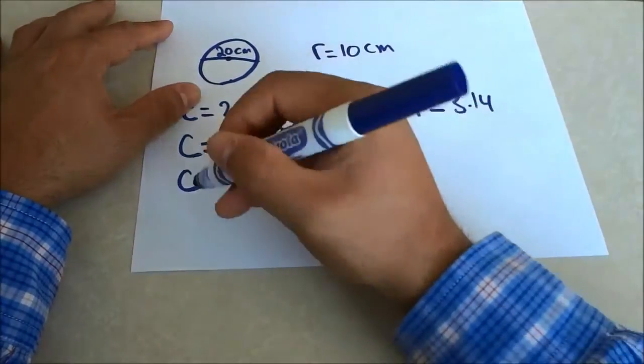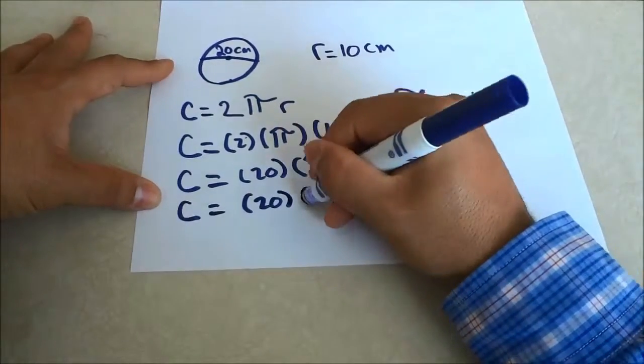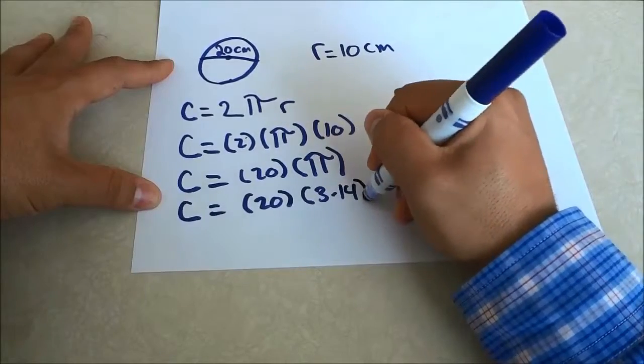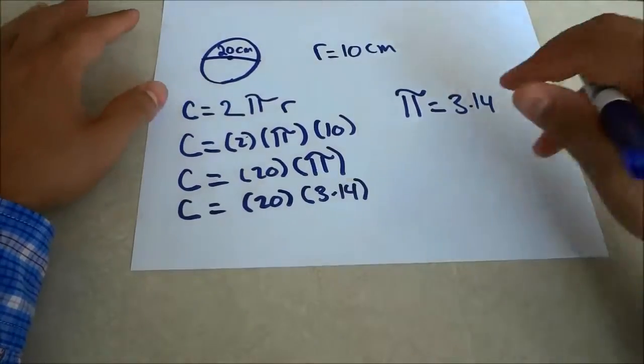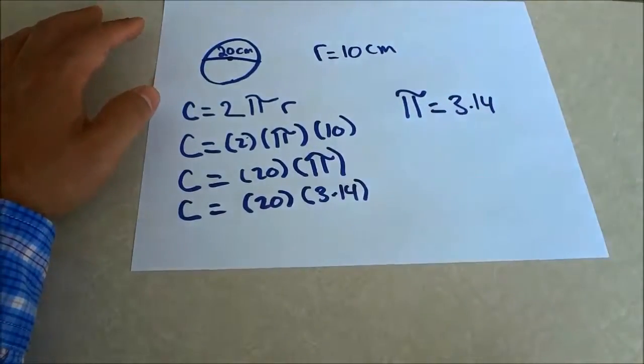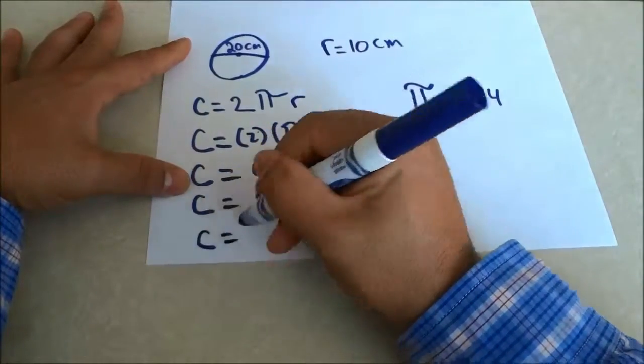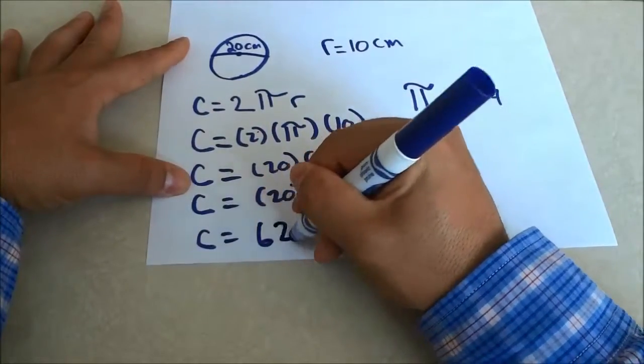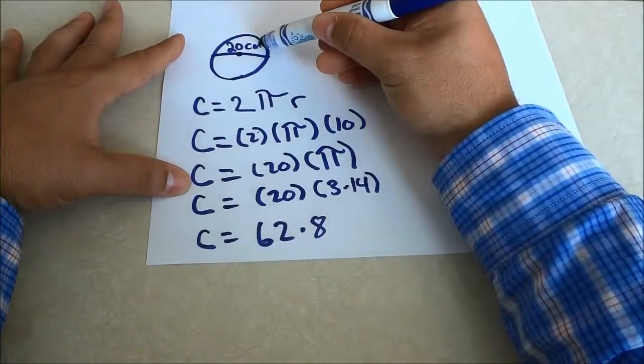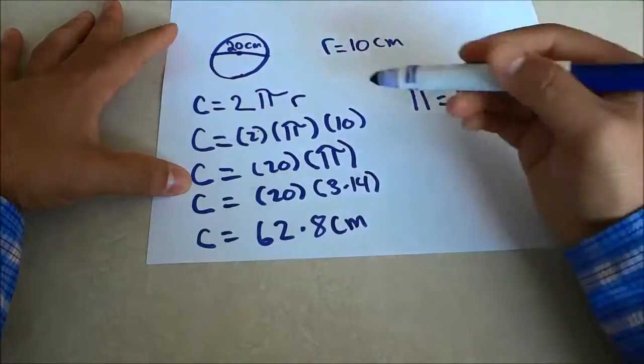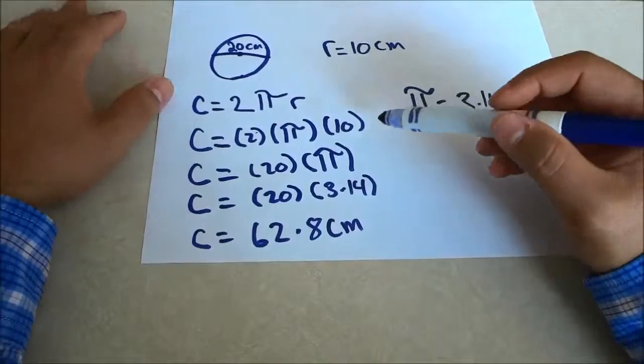So circumference equals 20 times 3.14, roughly. That will give us a really close estimate to the exact answer. If we multiply those two numbers together, we get that circumference equals 62.8. Then I just bring down the unit, which is centimeters. And I have now determined the circumference of the circle.